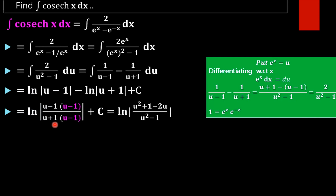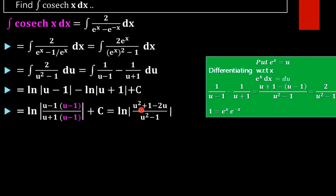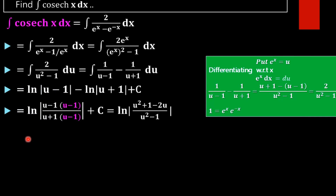Since the function is in the form of csch(x), we need to convert to hyperbolic form to get the final result. We multiply the numerator and denominator by (u − 1), giving (u − 1)² in the numerator, which expands to u² − 2u + 1, and (u + 1)(u − 1) = u² − 1 in the denominator.